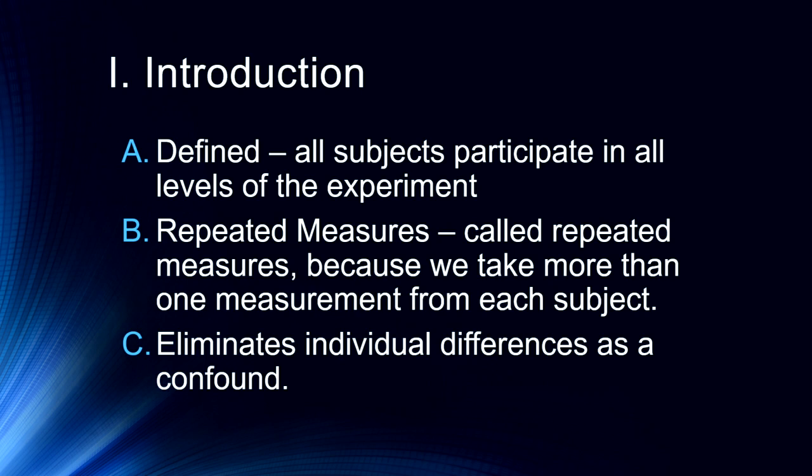For example, if we are studying younger adult women, we would be concerned about systematic variance in menstrual cycle, since we're testing them at potentially different portions of their cycle. It gets complicated in the real world, but in general we can eliminate individual differences as a confound.